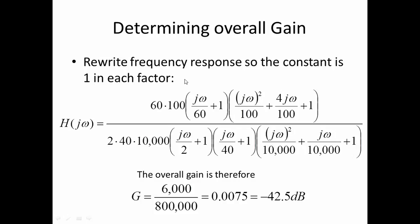To determine the overall gain, I factor out the corner frequencies so that all of my constants are 1. In the numerator, I have j omega over 60 plus 1, so I factored out the 60. I also have the second order term where I factored out the 100, put it out front. In the denominator, I factored out the 2, the 40, and the 10,000.